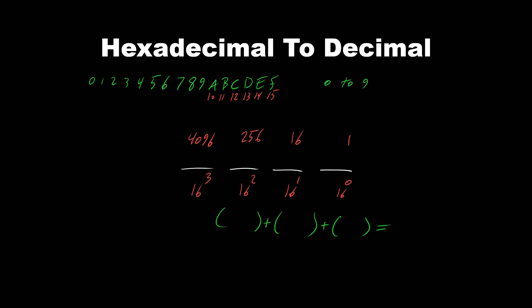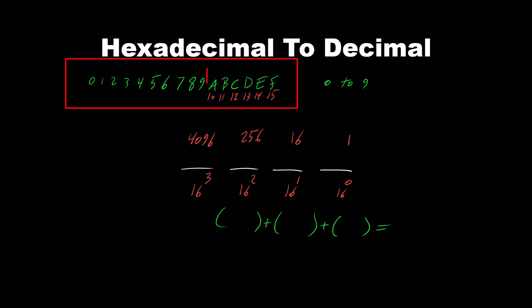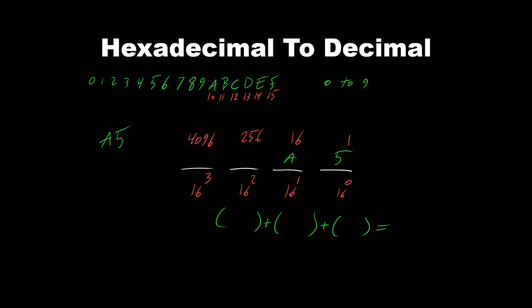Now let's look at another hexadecimal number. Previously we talked about 3D; now let's say we have A5. Hexadecimal numbers go from 0 to 9 and then A, B, C, D, E, F — there is no K. Using the direct place value method: 5 goes in the 1s place and A goes in the 16s place. Since A is 10, we compute 10 times 16 plus 5 times 1, which is 160 plus 5, giving us 165. So hexadecimal A5 equals 165 in decimal.